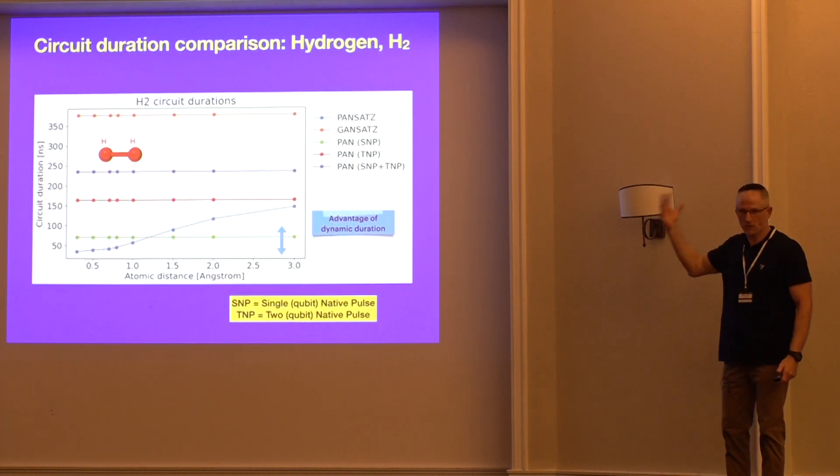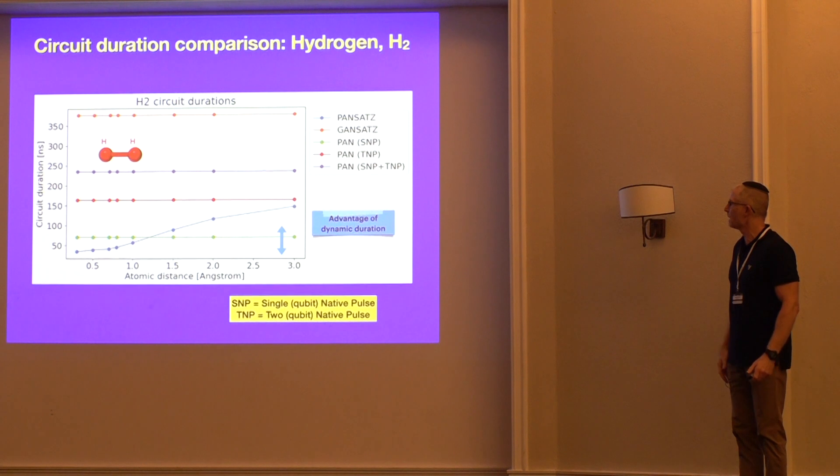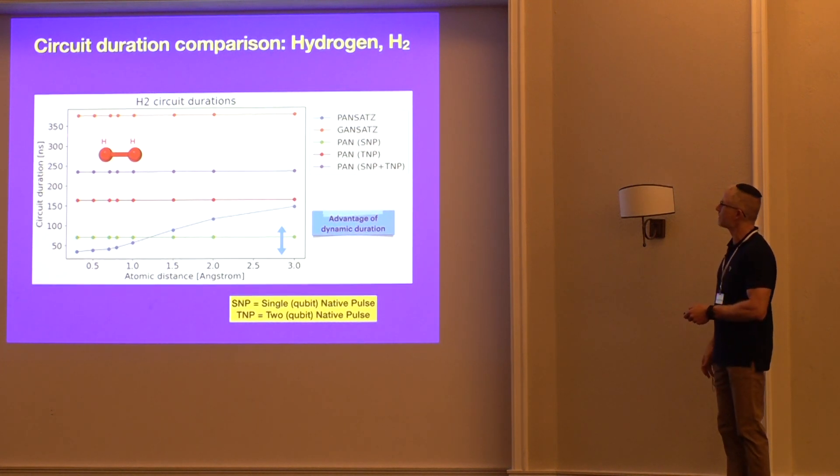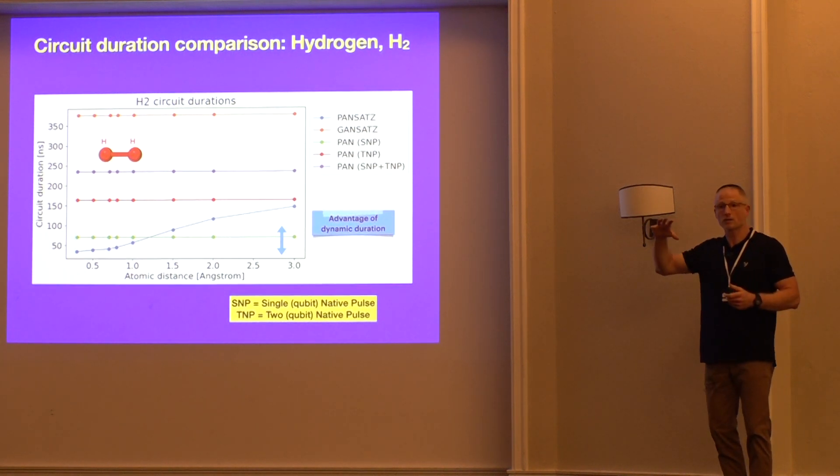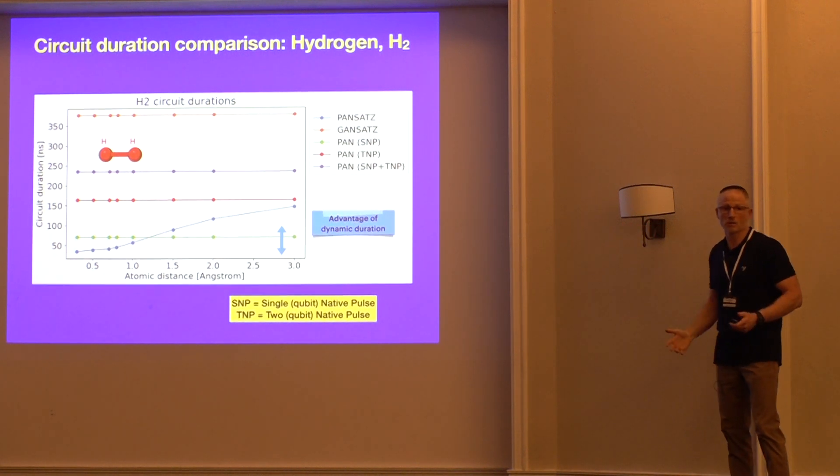Now, the important result, besides being accurate, is this plot here, which is circuit duration comparisons. This is the same calculations for all the different atomic distances, but this is the circuit duration. We've got on here the gansatz approach, which is just north of 350 nanoseconds. Then we come into a couple of the PAN results with single and two-qubit native pulses that they used. You can see the green one here is PAN with just a single native pulse, which gives them their best duration, about 60-70 nanoseconds. Ours is down here, which is south of 50 nanoseconds, but as the interatomic distances increase, our duration goes up and is worse duration-wise than PAN, but our accuracy is better. So with the duration being dynamic, it can adjust, and if we need more entanglement, then we can get it. It's a nice finding.